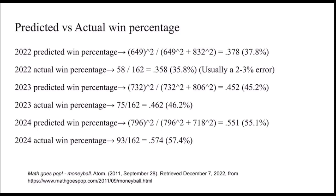Here's our predicted versus actual win percentage. We use the runs scored — 649 in the first year — and runs allowed — 832 — though these differ for each season. For the 2022 predicted win percentage, using that equation, we get 37.8%. Our 2022 actual win percentage was 35.8%, within the 2–3% error range. Our 2023 predicted win percentage was 45.2%, and the actual was 46.2% — very similar. Our 2024 predicted win percentage was 55.1%, compared to our actual of 57.4%. These are all within the margin of error, which concludes that the equation is pretty reliable.